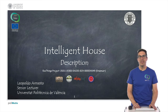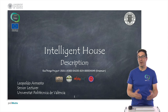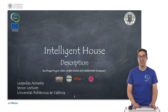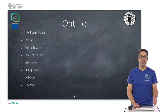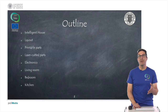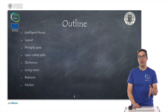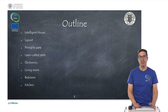Hello, my name is Leopold D'Armesto and in this presentation I'm going to introduce the intelligent house. I'm going to describe the main elements of this intelligent house we are proposing. This is the outline of the presentation: we're going to describe the intelligent house, show you the layout, some of the printable parts and also some laser-cut parts, a brief description about the electronics, and in particular three instances of the house — the living room, the bedroom, and the kitchen.